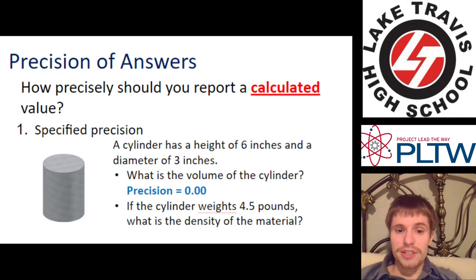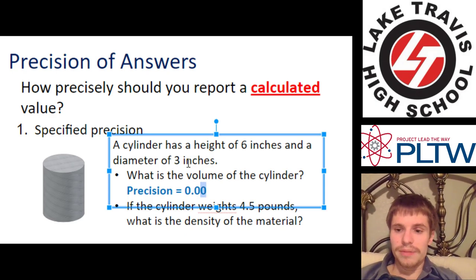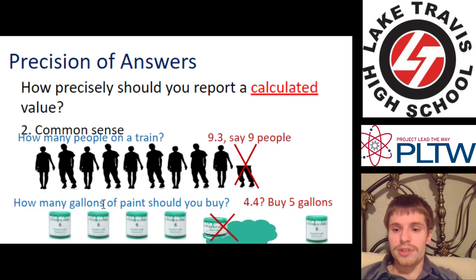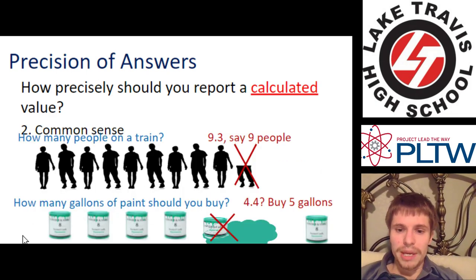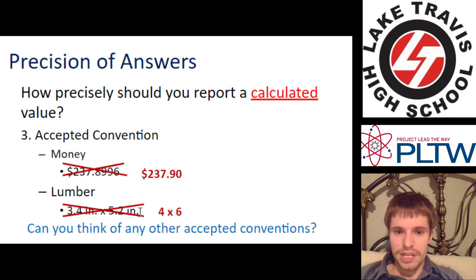First one, specified precision. If I tell you, calculate the volume here and record it to the nearest hundredth of a cubic inch here. Then I might say precision is 0.20 and you would just record to the nearest hundredth of an inch. Easy. Number two, common sense. If you calculate that you need 4.4 gallons of paint, buy five. That makes sense. If you calculate you need 4.01 and maybe make it stretch, use your common sense. Engineers are much better than mathematicians about using their common sense. Accepted conventions. Round money to the nearest cent. Round lumber to the nearest inch. Easy.